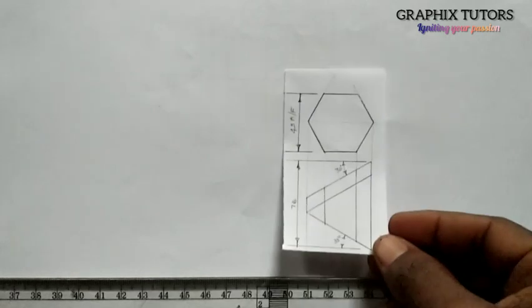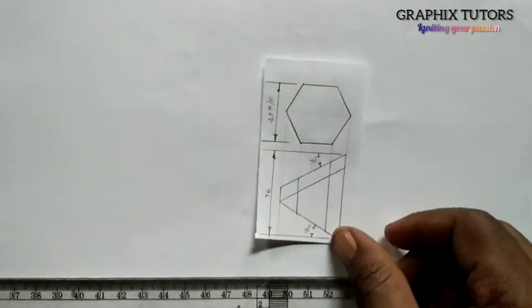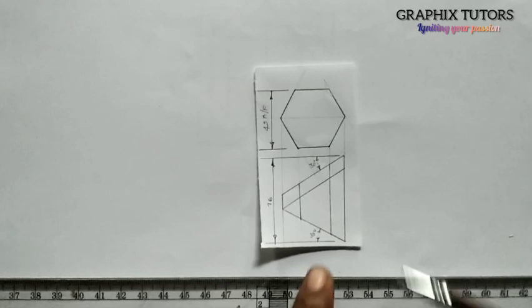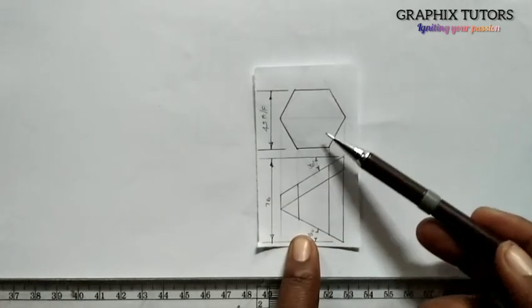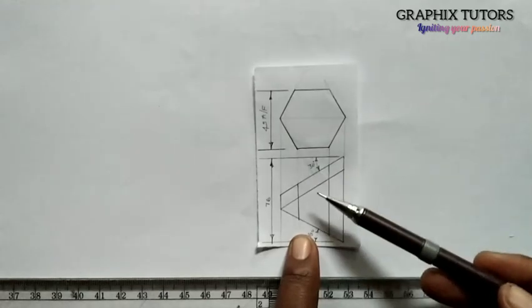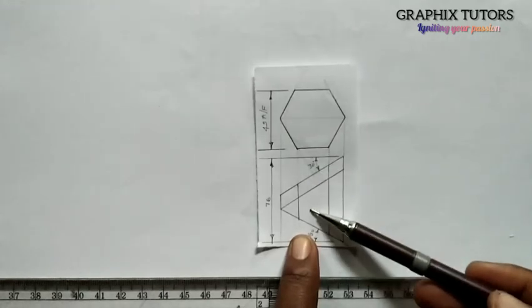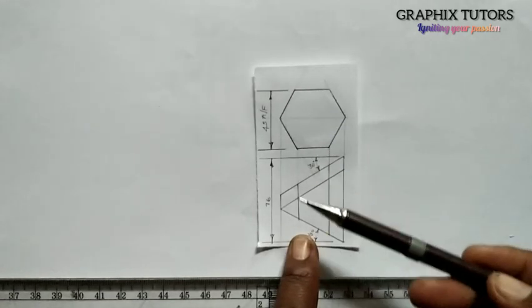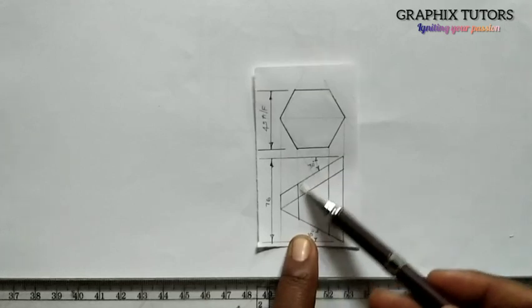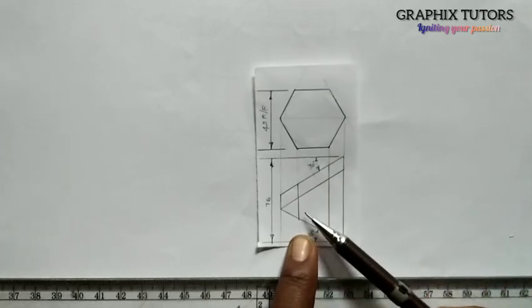Good everyone, my name is Graphics. Today we want to solve another exercise on development where we are going to be analyzing this figure here. This is a hexagon - the plan and the elevation. Whenever you have the plan and the elevation, it means it is in third angle projection. Now I want to develop this elevation here.